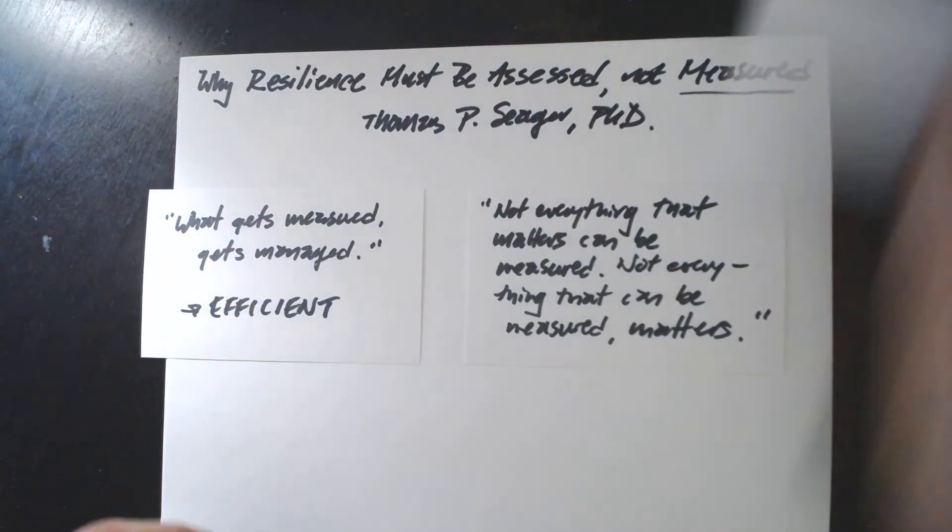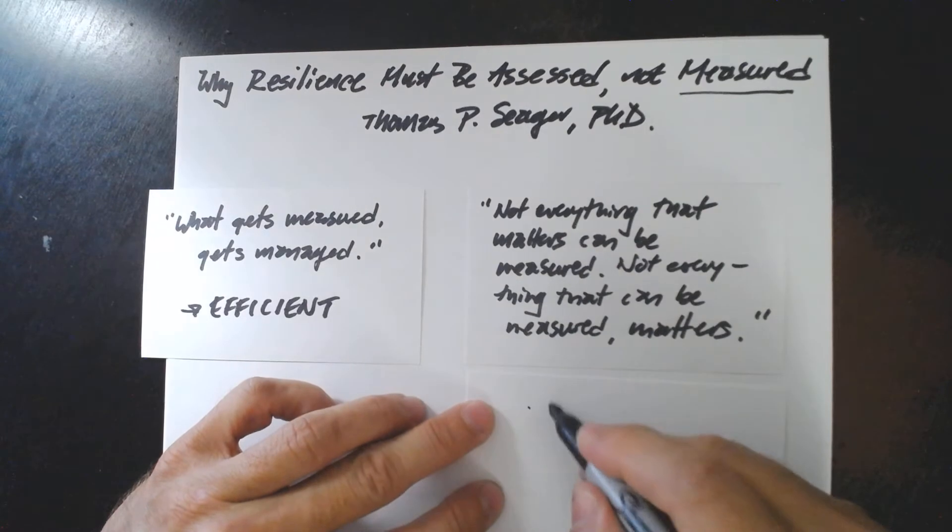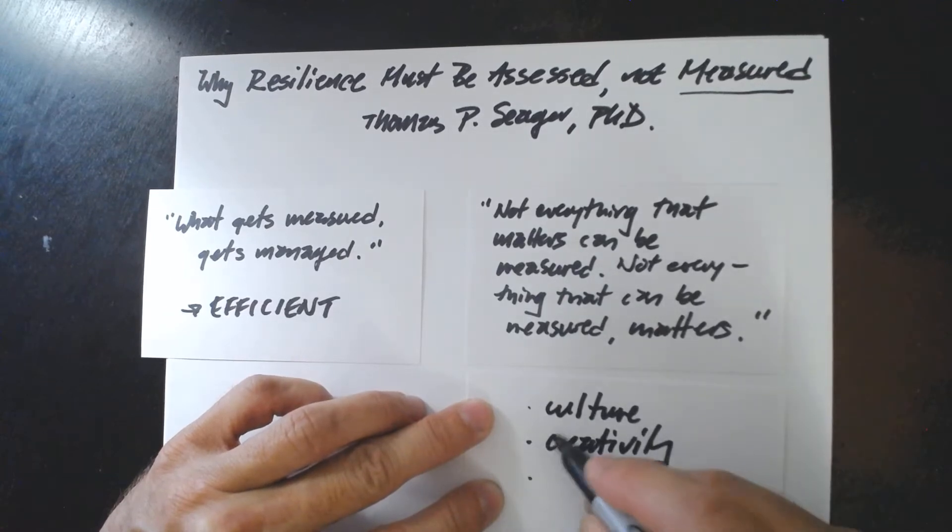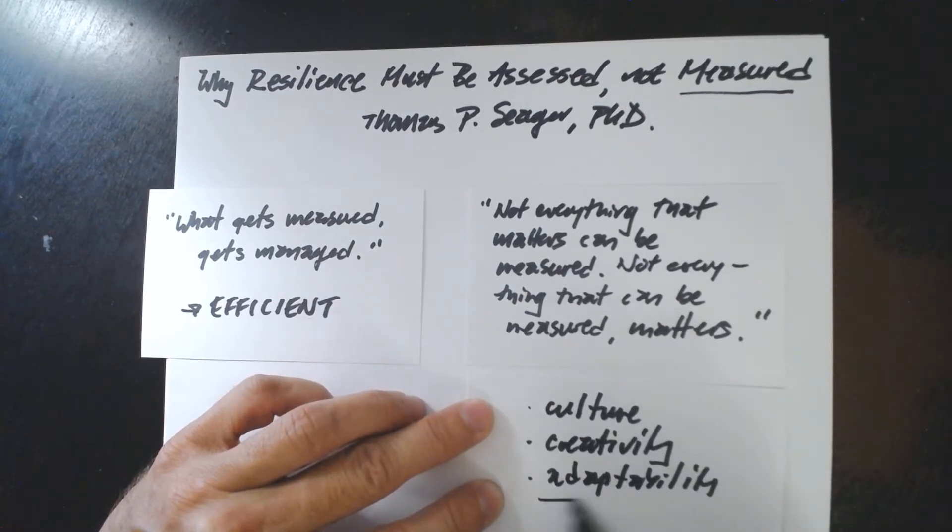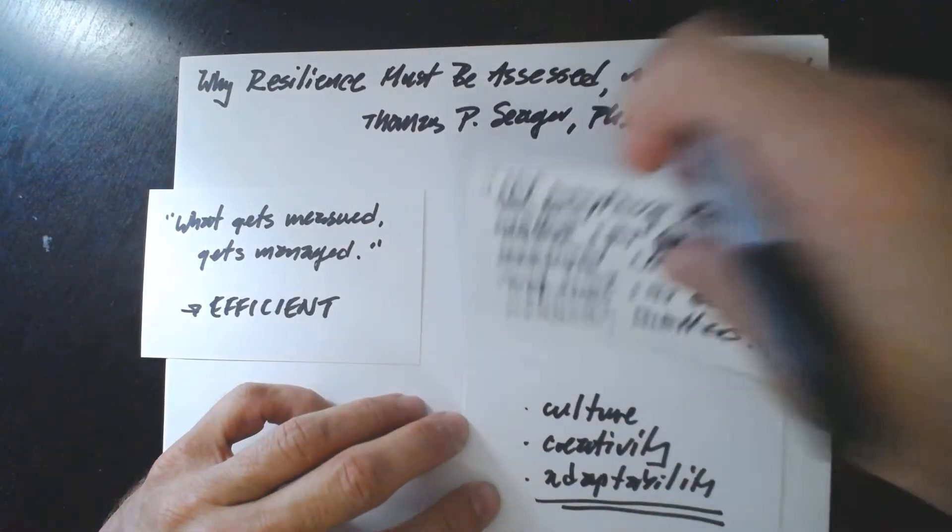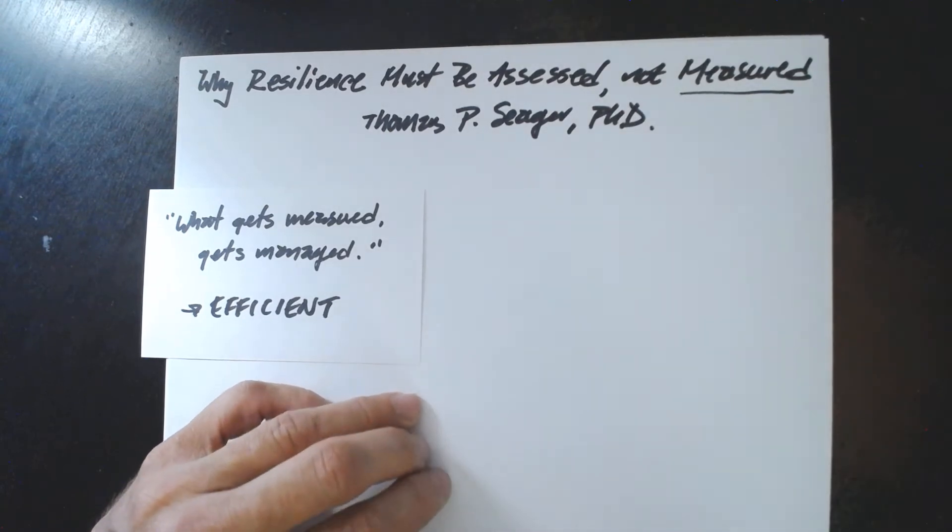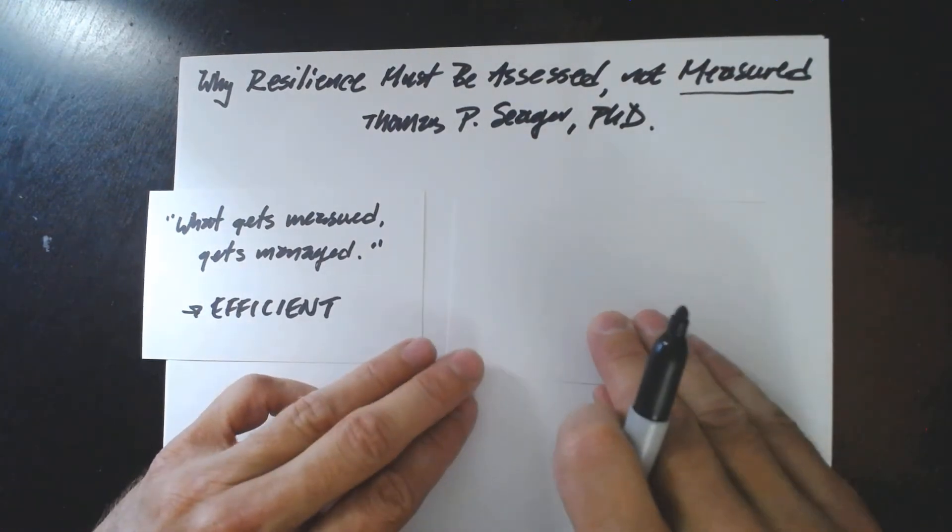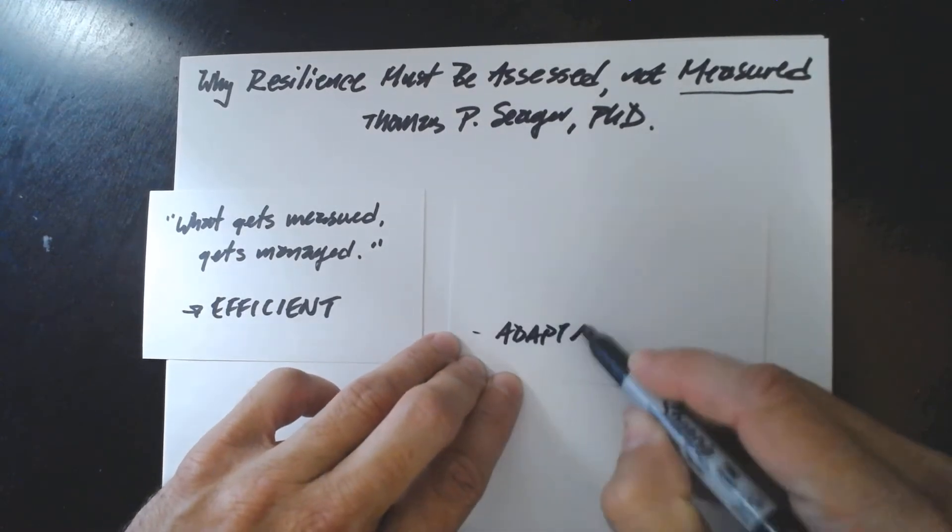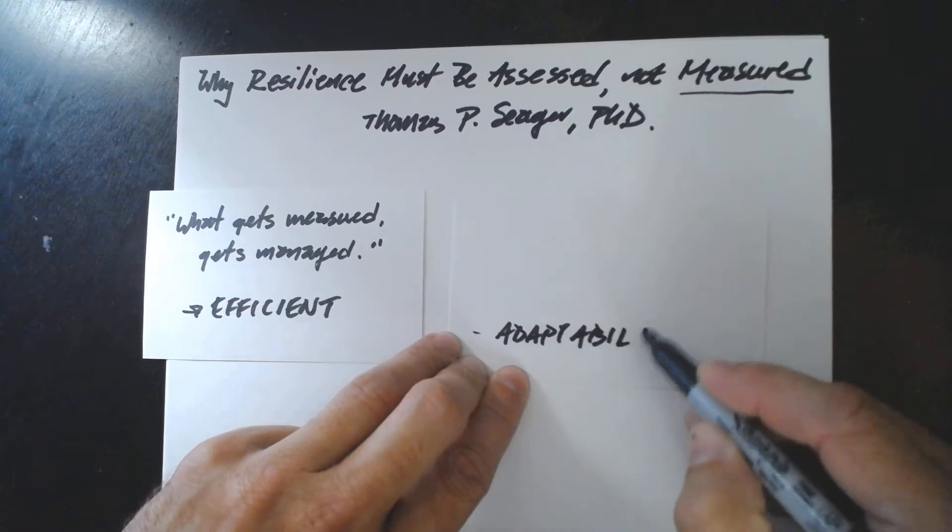Well, what are some of those important things? Perhaps it's something like culture. Perhaps it's something like creativity. Perhaps it's something like adaptability. And it is this adaptability that is the critical concept essential to resilience. So we're going to get into adaptability in a little more detail.